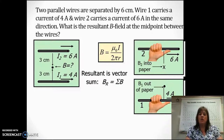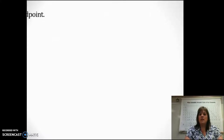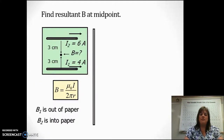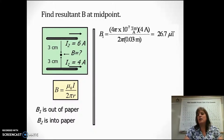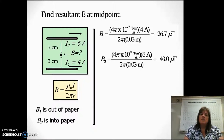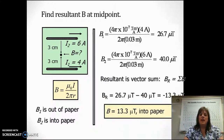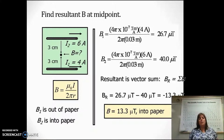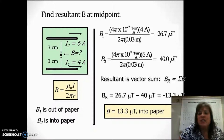The resultant vector is going to be the sum of both — one is in (call it positive), the other is out (call it negative). For current one you should have gotten 26.7 microtesla (times 10 to the negative 6). For current two, which has a higher current, 40 microtesla. You're going to subtract these two numbers and get negative 13.3 microtesla. Make sure you keep track of whatever you call positive and negative. Calling negative into the page, that would be 13.3 microtesla into the page.